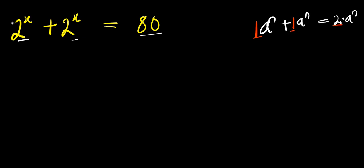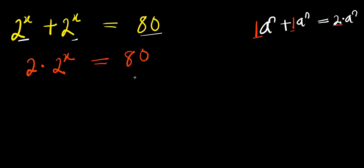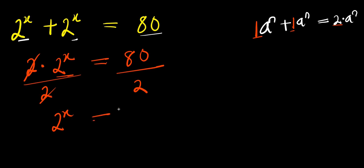So the coefficient of 2 power x here is 1, and the coefficient here also is 1. So if you add the 1 and the 1, you are going to have 2. So this will give you 2 times 2 power x equals 80. So you isolate 2 power x by dividing both sides by 2. 2 cancels 2, you have 2 power x equals 80 divided by 2, that is 40.